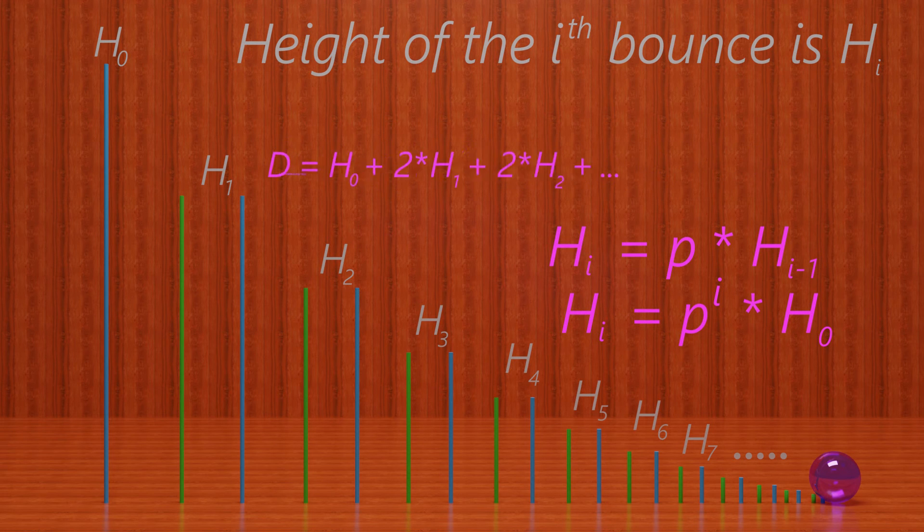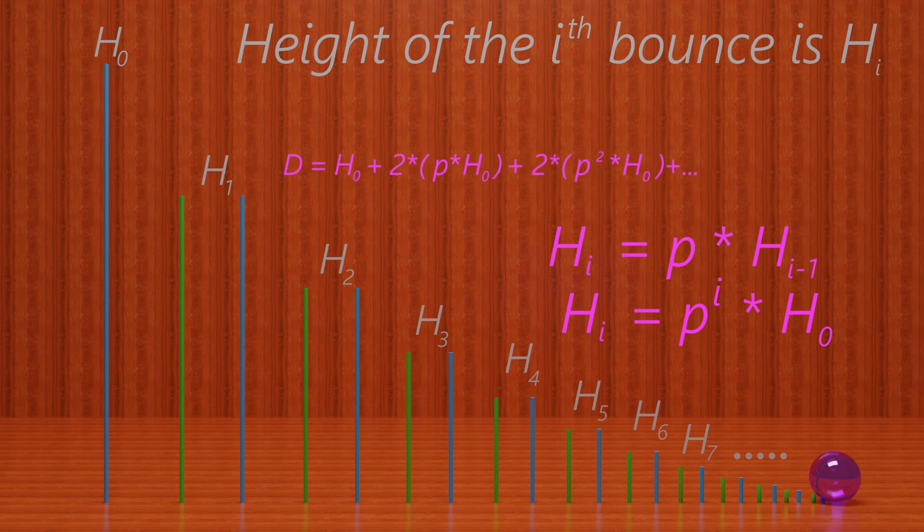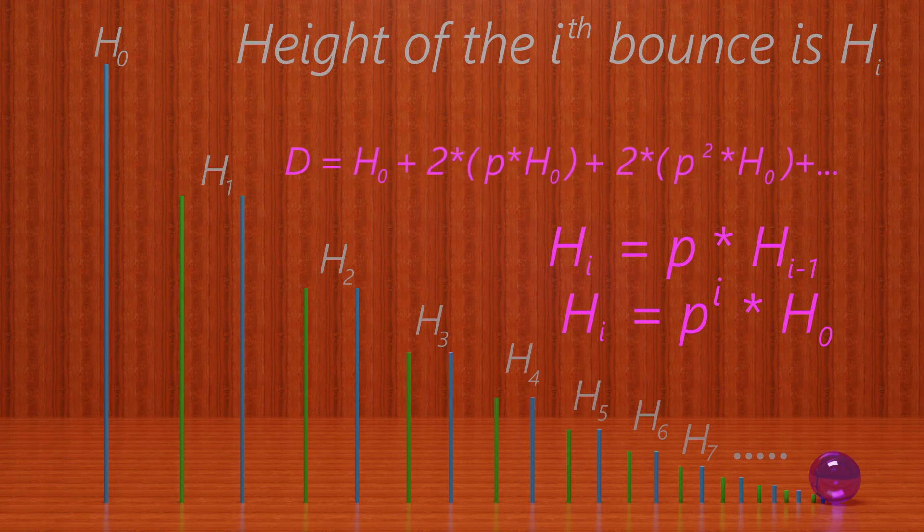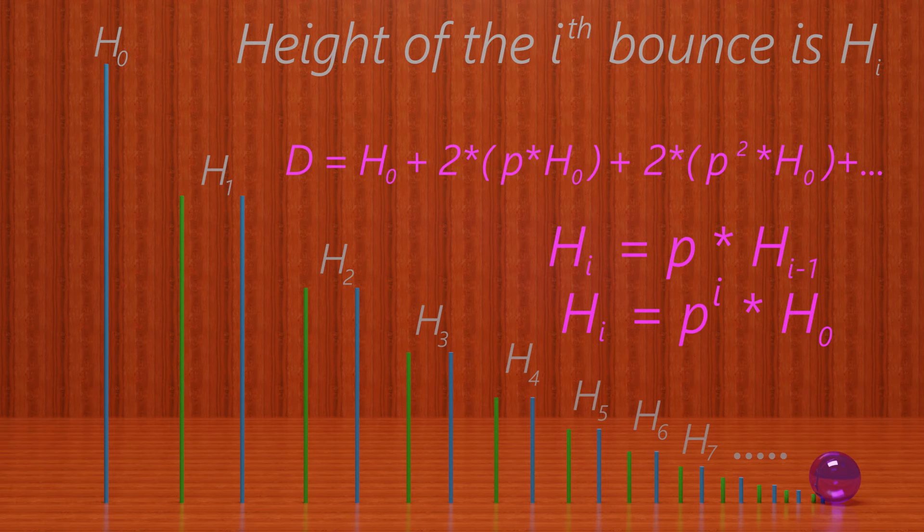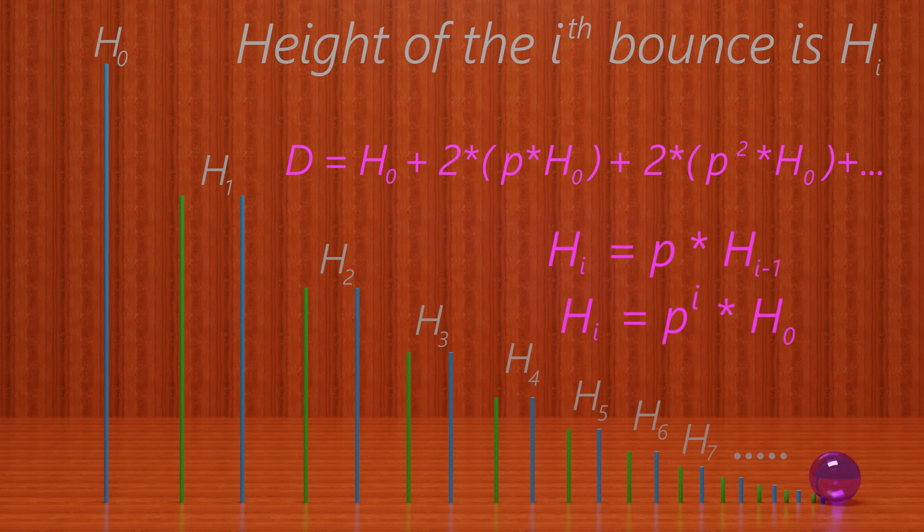Substituting this in, we get that distance is equal to H0 plus 2p times H0 plus 2p squared times H0 plus 2p cubed times H0 plus dot dot dot.